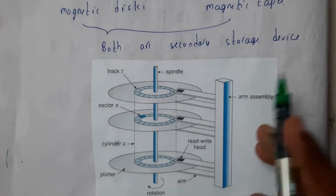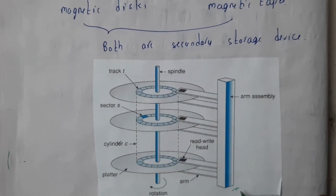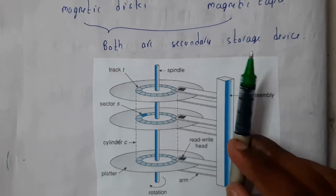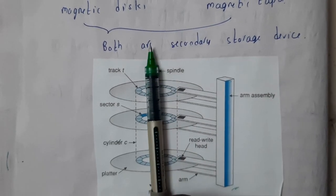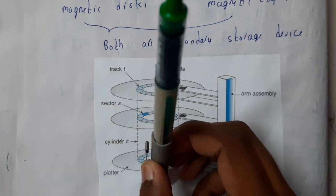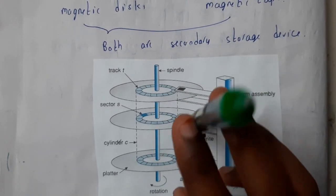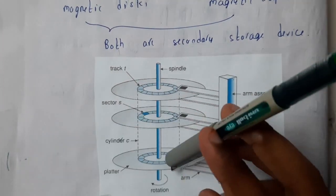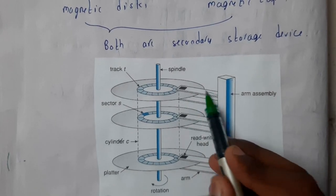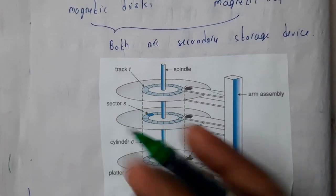Hard disks or magnetic disks are really small and the disks are placed really close together. For our understanding, I took a picture which is relevant. We have an assembly arm. The spindle holds the disks, which are placed one upon the other. Both sides of the disks are magnetically coated, so we can store data on both sides.